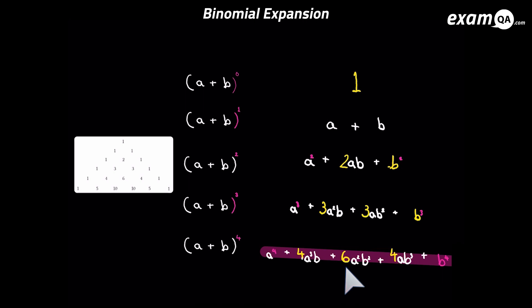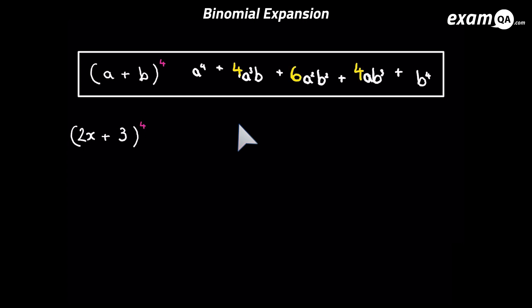From all this information, we should be able to expand some brackets. Another thing to notice: if you look at any term and add up the powers on a and b, they'll always add up to four, which is the power of the main bracket — and that's always going to be the case. So let's go ahead and look at a question where instead of a and b we've got some terms. We want to expand 2x plus 3 to the power of 4.